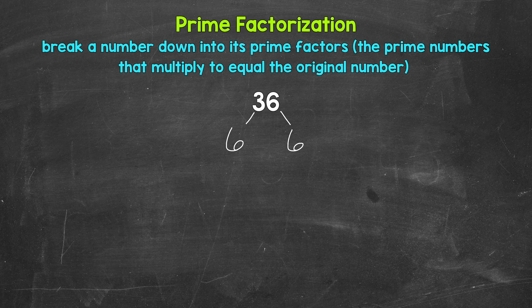So we need to think of two factors. Well, 2 and 3 are factors of 6. 2 times 3 equals 6. So let's break these 6s down into 2 and 3.